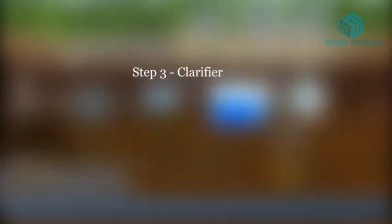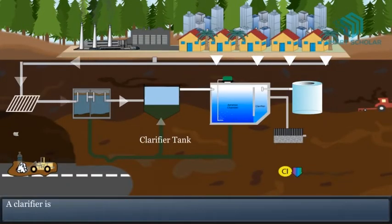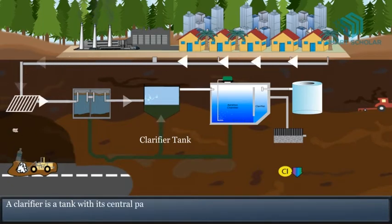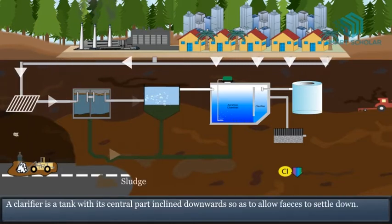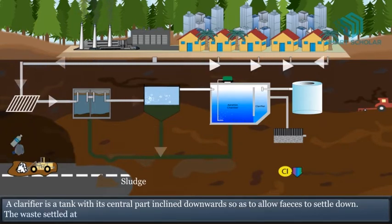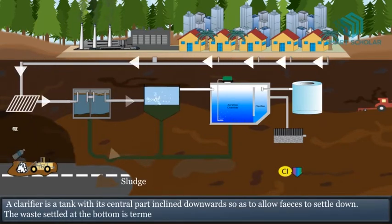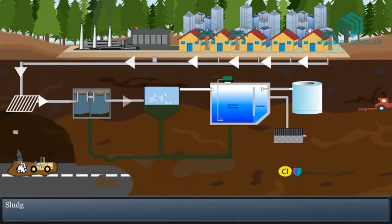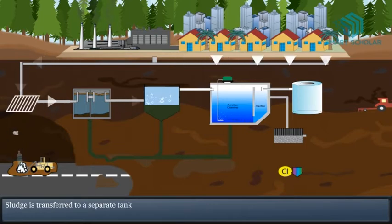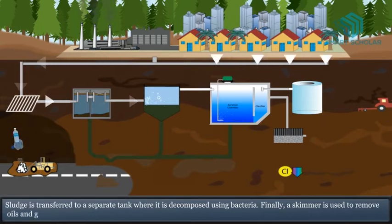Step 3: Clarifier. A clarifier is a tank with its central part inclined downwards so as to allow feces to settle down. The waste settled at the bottom is termed as sludge. Sludge is transferred to a separate tank where it is decomposed using bacteria.